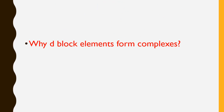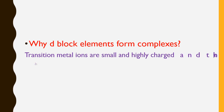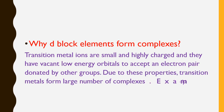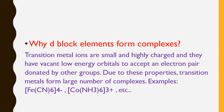Why do d-block elements form complexes? The reason is that transition metal ions — for example iron, cobalt, and nickel — are very small and highly charged. They have vacant, low-energy orbitals available to accept an electron pair from a donor.